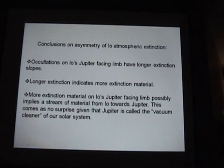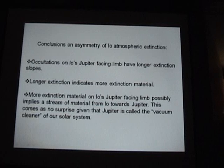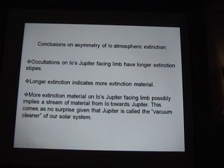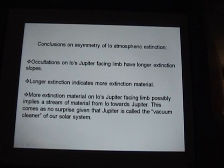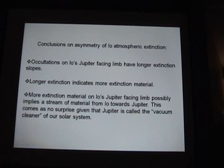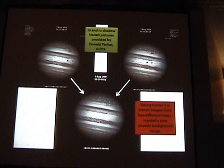What that's representing, in my opinion, is that there is additional material — this is just my theory — likely streaming back towards Jupiter from Io that is causing this asymmetry. My first theory was a comet-type model in which the front of Io's motion would be compressed with a trailing tail, but that wasn't the case. It was linked to which limb was facing Jupiter.